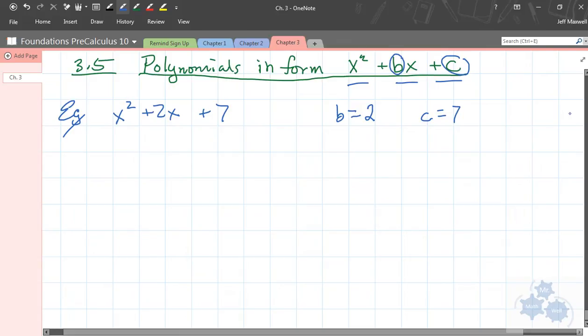So, it's this format that we're going to explore. Another one, real quick, X squared, minus 5X, plus 1, where B is negative 5, and C is positive 1. So, those are some examples.